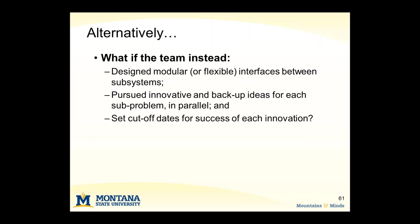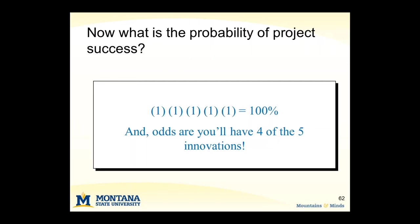Let's switch this around. Let's say that we pursue a backup alternative along with the innovative one, and we set a cutoff date that says if the innovative idea hasn't panned out by a certain date, we revert to the backup. Now, since you can always revert back to the backup idea, you have a 100% chance of product success — and at the same time, odds are good that you'll end up with four of those five innovations. This idea of gradual narrowing and keeping a backup solution can be really powerful in your development processes.